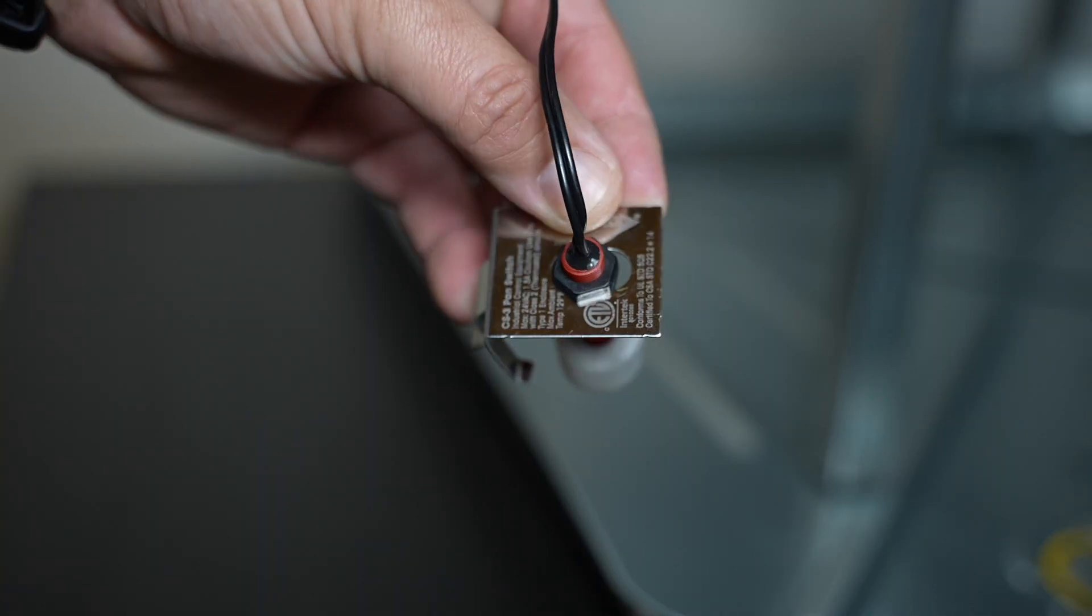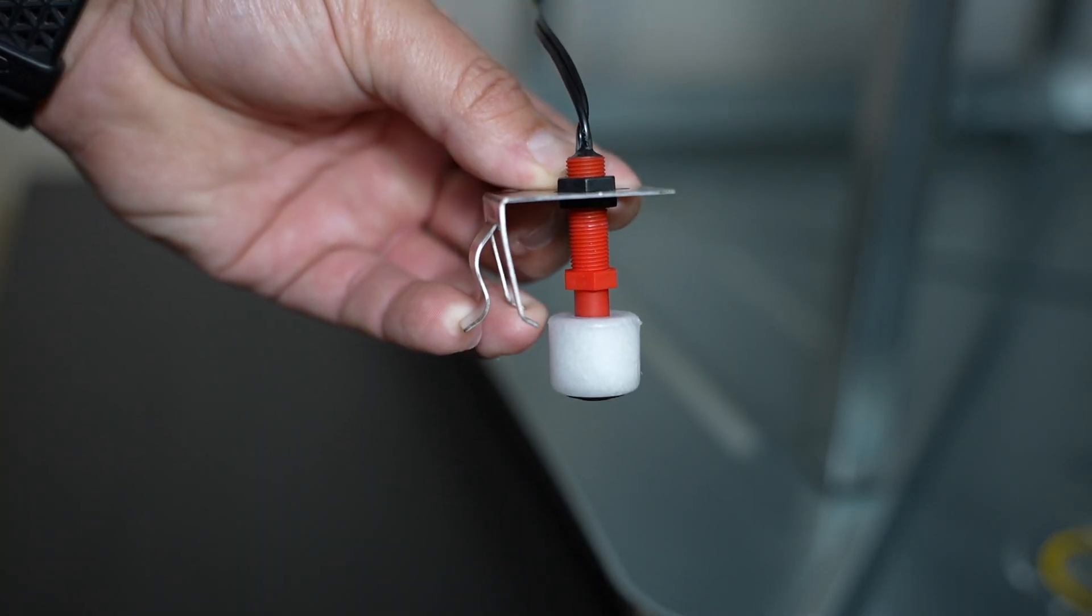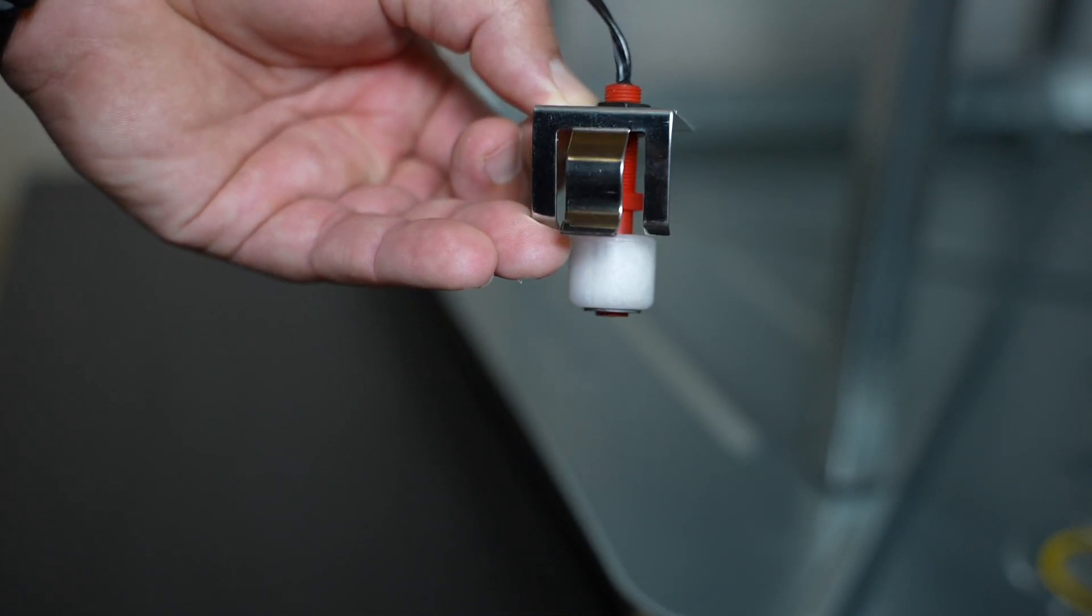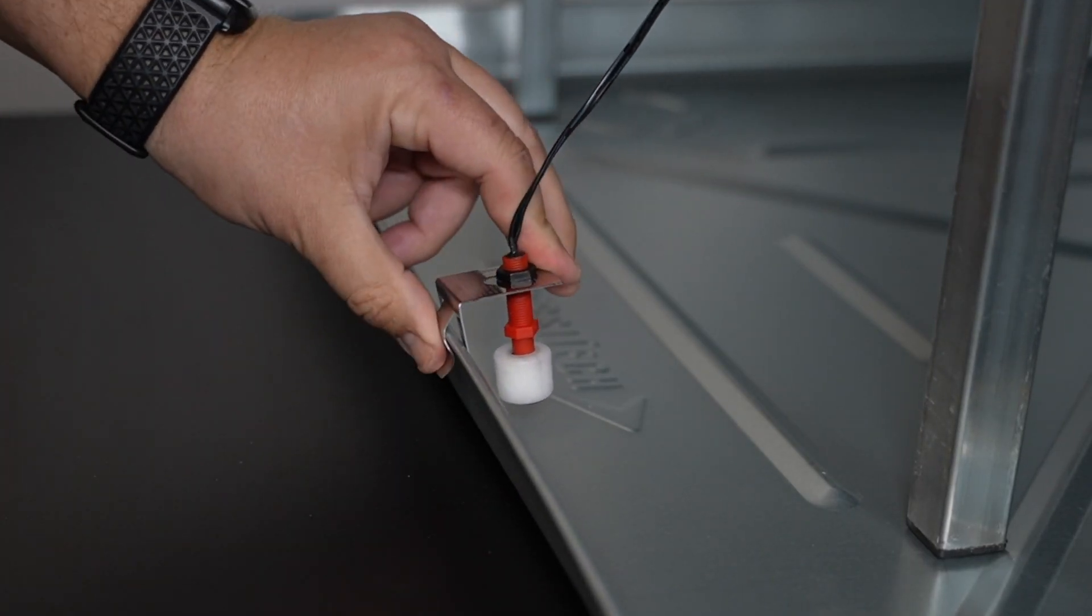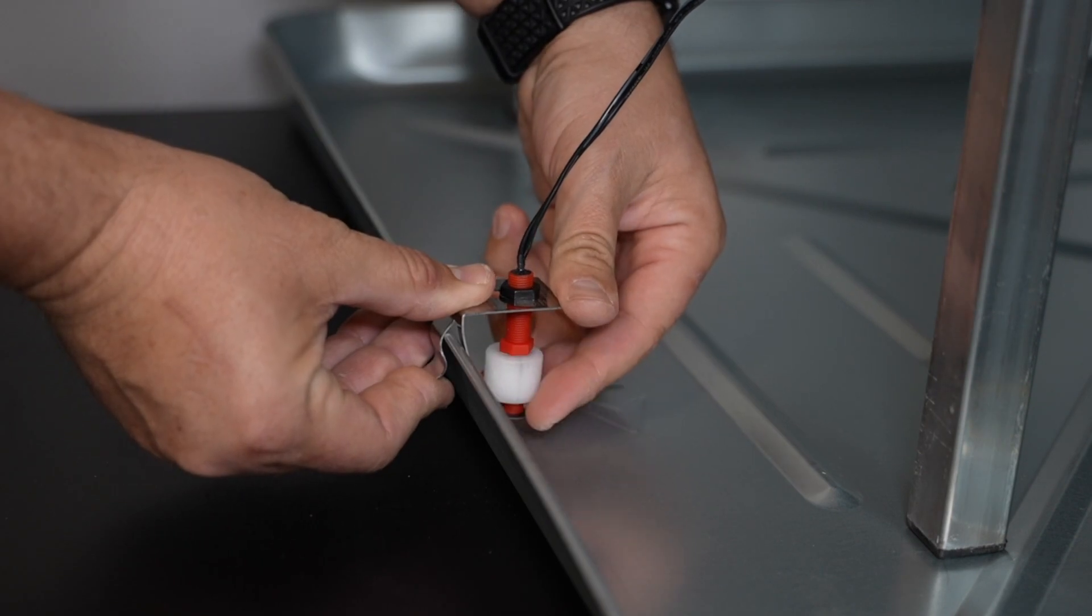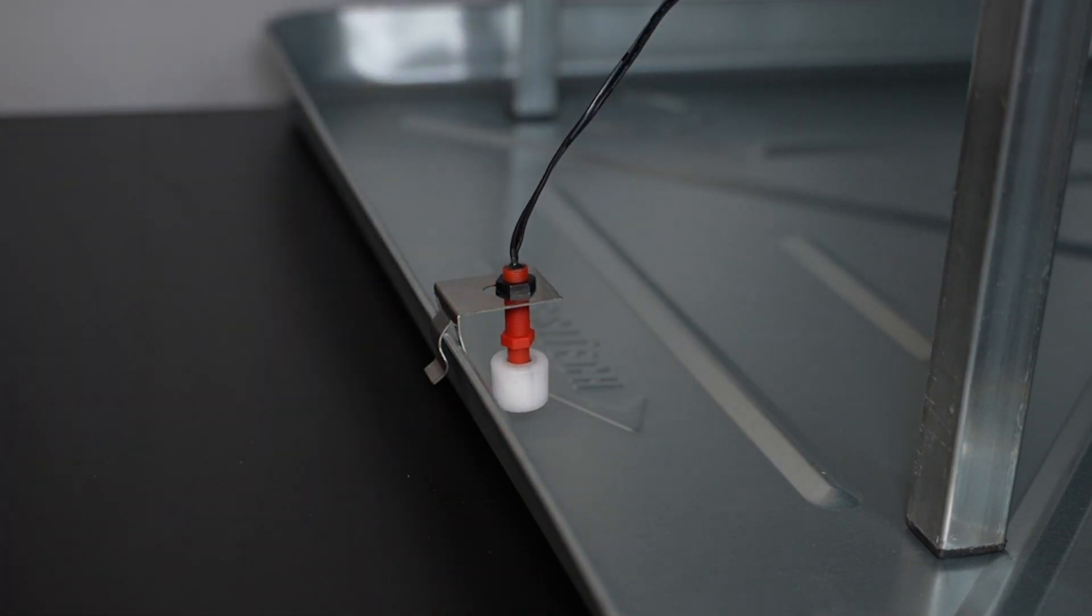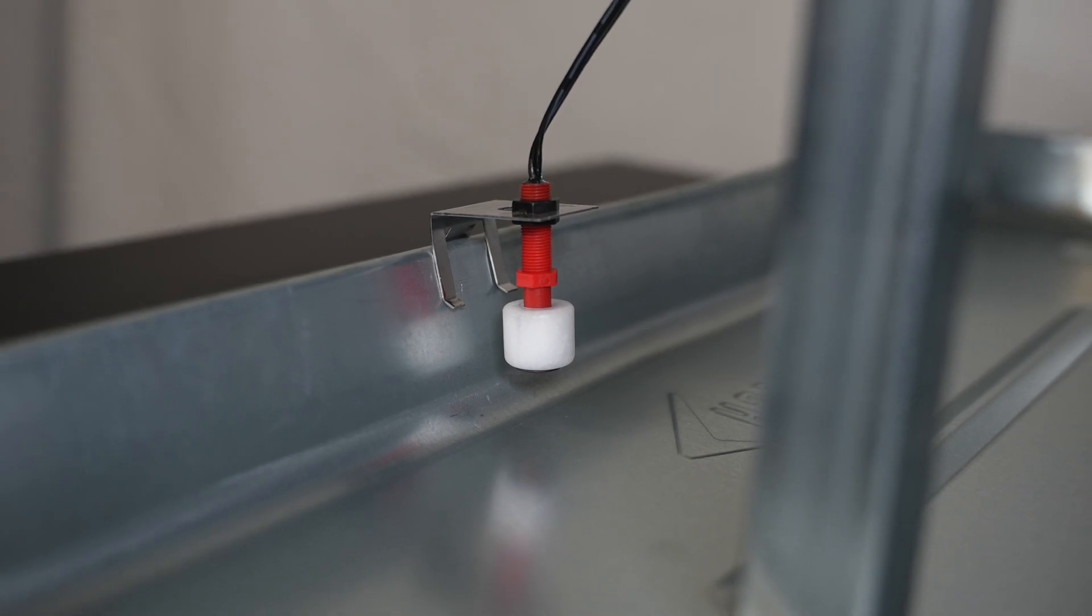The CS3 condensate overflow switch is a clip-on style switch designed for primary and secondary pans. It has adjustable activation height. Its design lets you easily position anywhere along drain pans. It's made for standard primary and secondary drain pans.